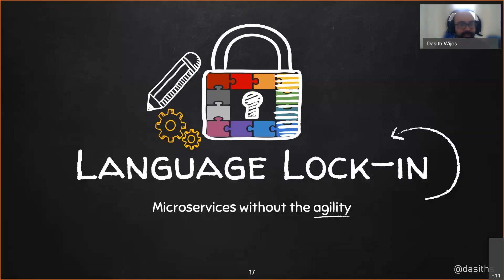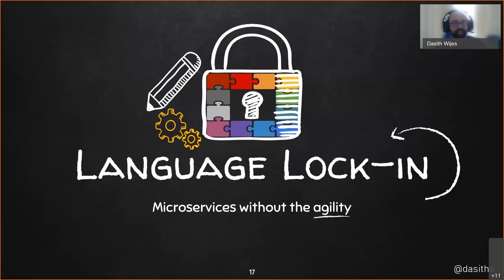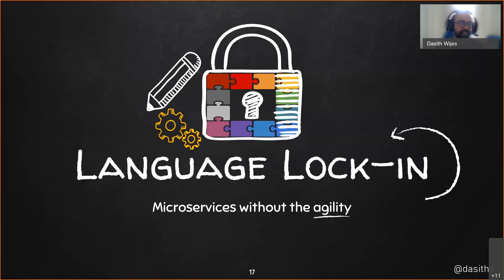Frameworks typically only target one or two languages at most. This means your development team can only use those particular languages to build your microservices with that framework. For a dynamic, evolving polyglot team, this can be very limiting and can slow your team down. Microservices, in my opinion, are about agility and the choice of the right tool for the job — and frameworks definitely don't allow you to do that.